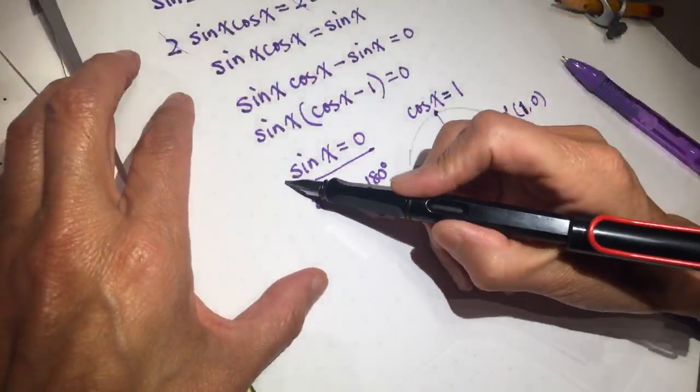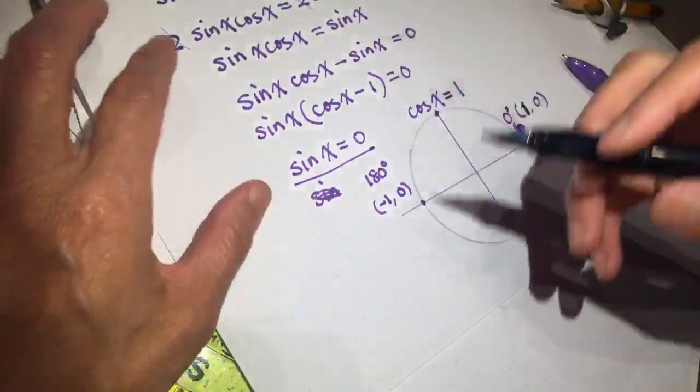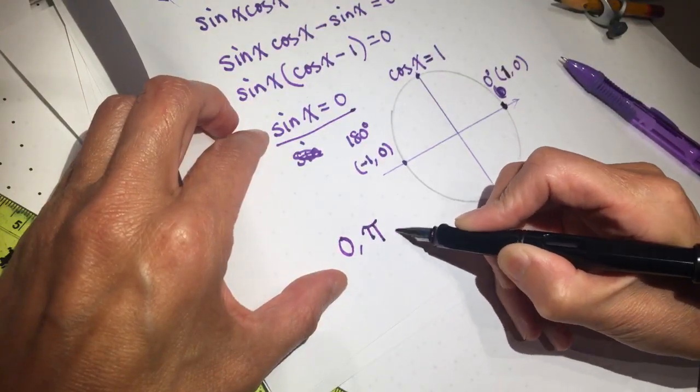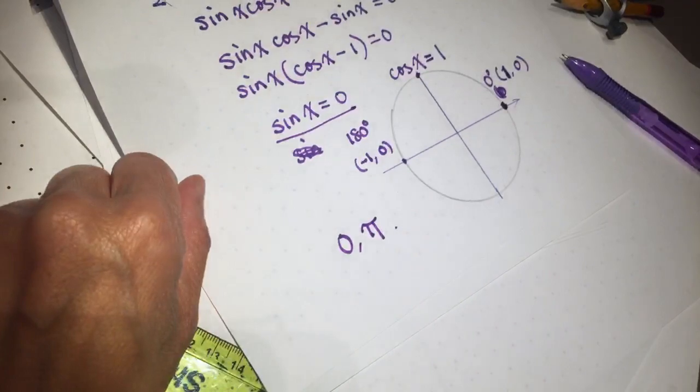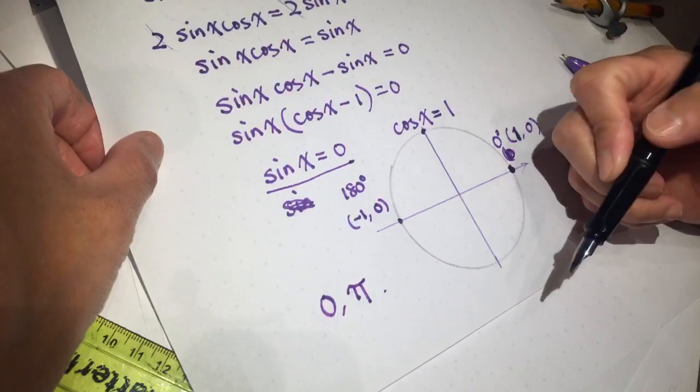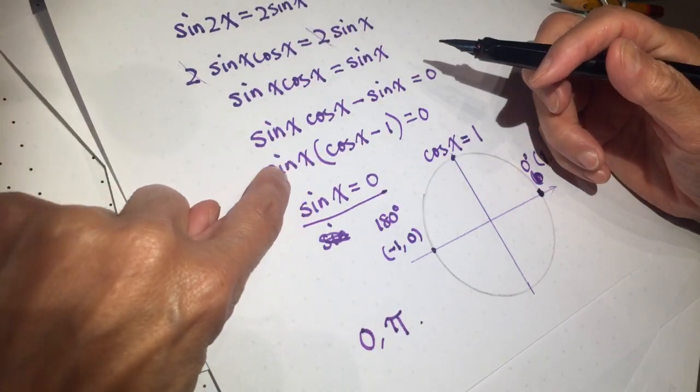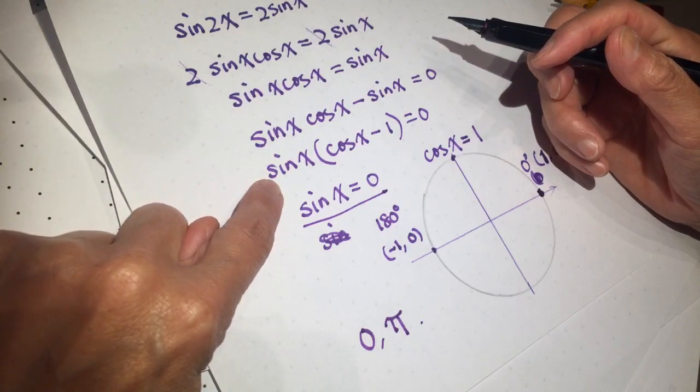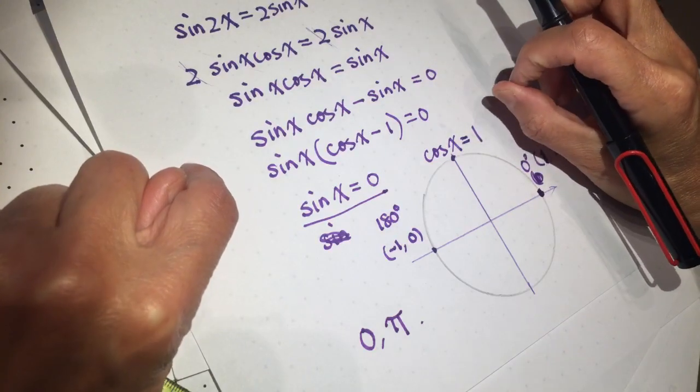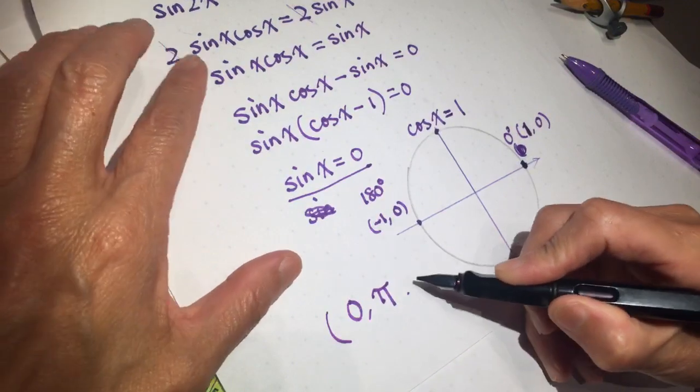But as long as sin(x) = 0, it fits into this problem. So the answer is zero and π. Do I make sense? Right? The answer is zero and π. Because this is zero, it's already fit into this equation. Makes sense, right? So the answer is zero and π.